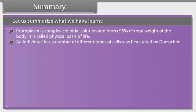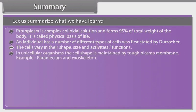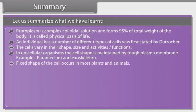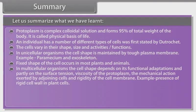That an individual has a number of different types of cells was first stated by Dutrochet. Cells vary in their shape, size and activities or functions. In unicellular organisms, the cell shape is maintained by a tough plasma membrane — for example, Paramecium and exoskeleton. Fixed shape of the cell occurs in most plants and animals. In multicellular organisms, the cell shape depends on its functional adaptations and partly on the surface tension and viscosity of the protoplasm, the mechanical action exerted by adjoining cells, and the rigidity of the cell membrane.